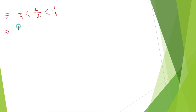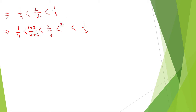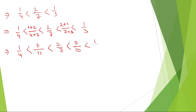Again, let us do like before. Let us put a gap: 2 by 7, and a gap: 1 by 3. So this will be 1 plus 2 divided by 4 plus 7, and here it will be 2 plus 1 divided by 7 plus 3. So 1 by 4 is less than 3 by 11, less than 2 by 7, less than 3 by 10, less than 1 by 3. Now we got 3 numbers, but the question is asking us to find 5 numbers.